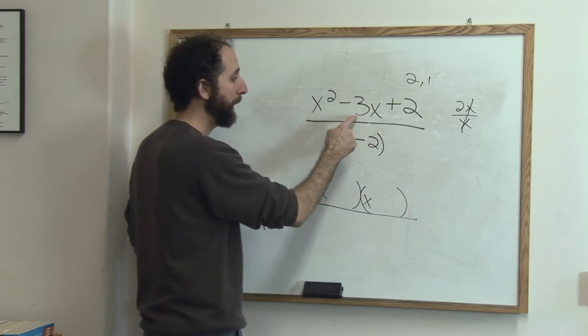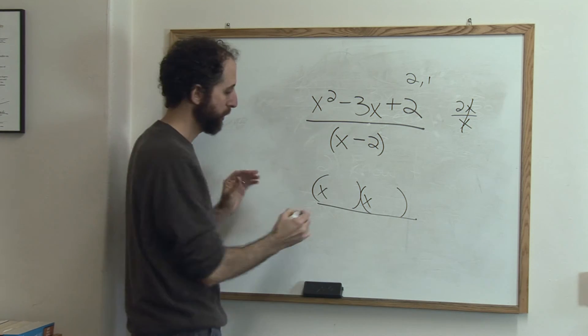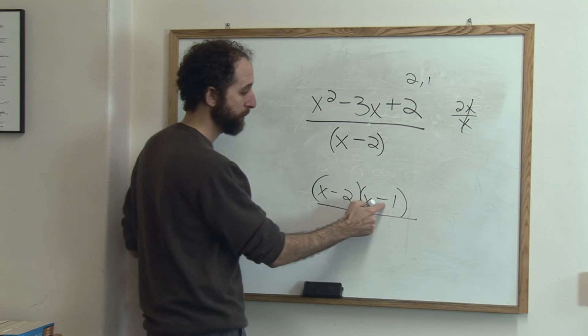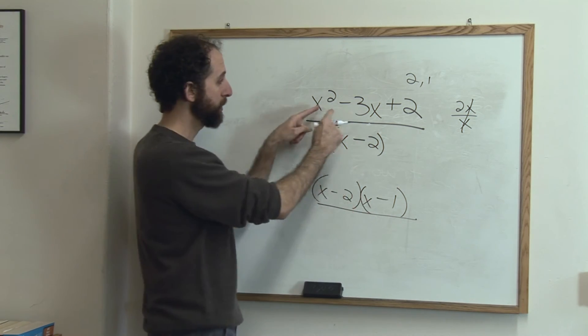And sure enough, 2 and 1 can combine to make 3. So we're going to have minus 2 minus 1. x minus 2 times x minus 1 foils out to be this.